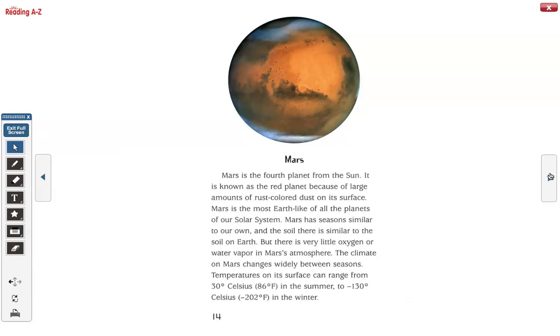Mars. Mars is the fourth planet from the Sun. It is known as the red planet because of large amounts of rust-colored dust on its surface. Mars is the most Earth-like of all the planets of our solar system. Mars has seasons similar to our own, and the soil there is similar to the soil on Earth. But there is very little oxygen or water vapor in Mars' atmosphere.